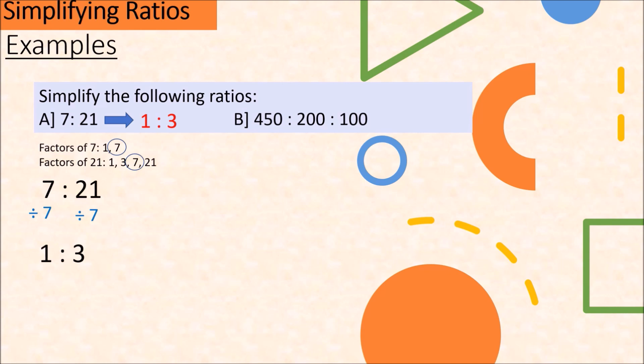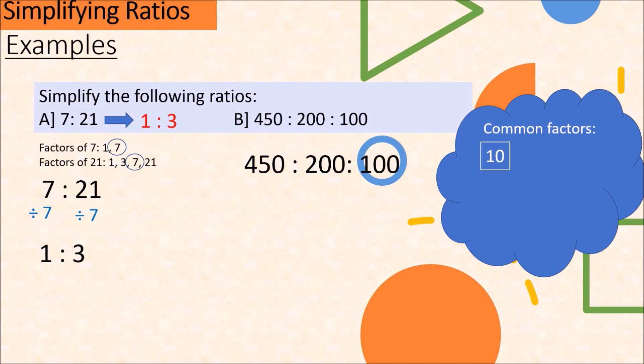We will move to the next example. So this ratio this time has 3 terms: 450 is to 200 is to 100. Now for a big number, let's find a number that can divide all of them. So if we will inspect, they all end with a 0. And we all know that if a number ends with a 0, it's a multiple of 10. Therefore, 10 is a common factor. So we can divide all numbers by 10. So 450 divided by 10 is 45, 200 divided by 10 is 20, and 100 divided by 10 is 10.